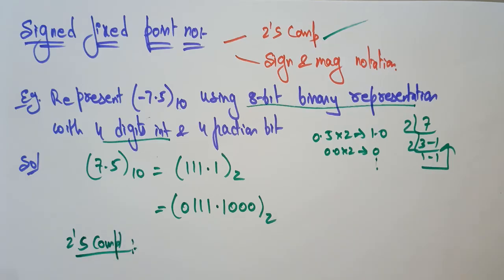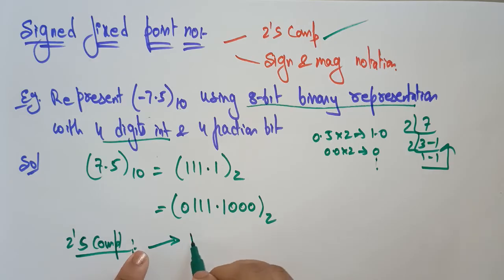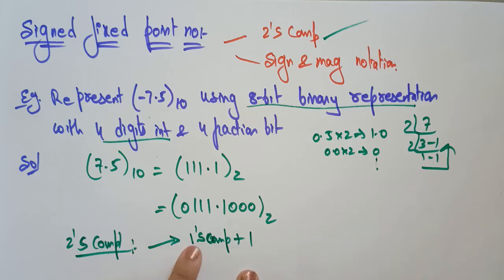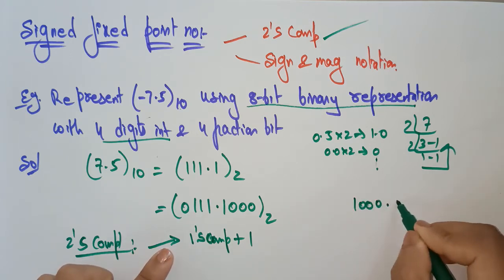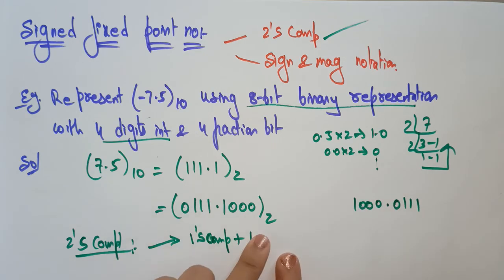There are two methods for finding the two's complement. The first method is: find the one's complement first, then add 1. One's complement means you negate the given number — so negate 0111.1000 to get 1000.0111 — then add 1.